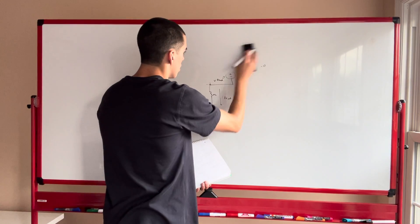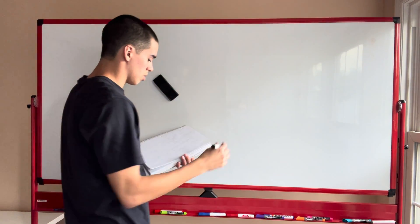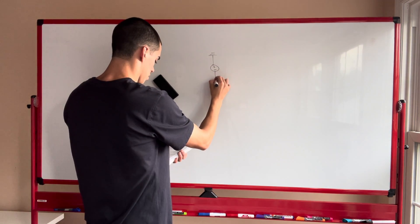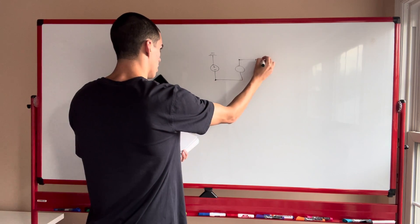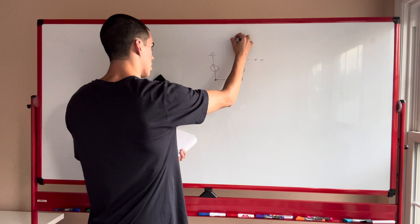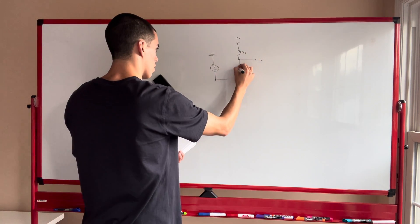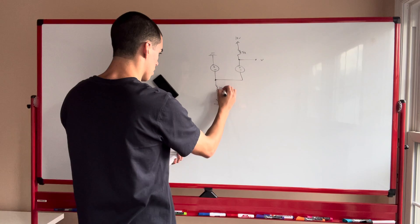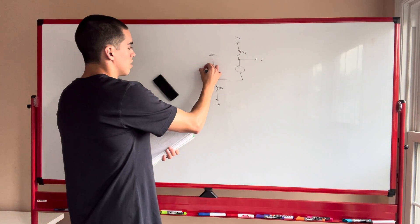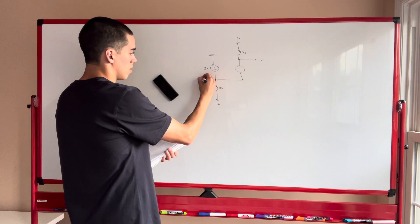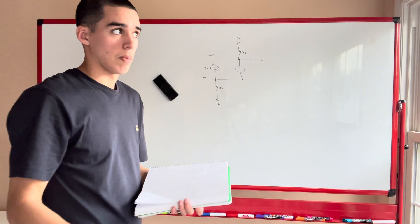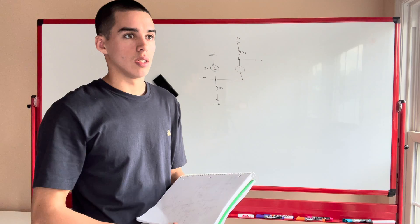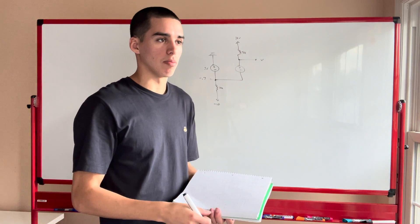For the next circuit, again drawing it: ground, a diode, a voltage V, a 5-kilohm resistor, and 10 volts. If this is ground and this node is negative 0.7 volts, we're assuming the diode is on — meaning it's conducting with a voltage drop of 0.7 volts.